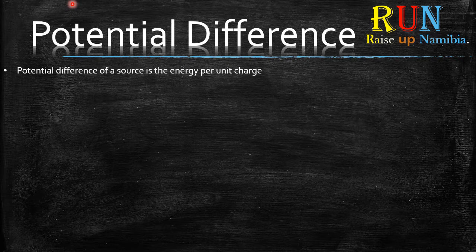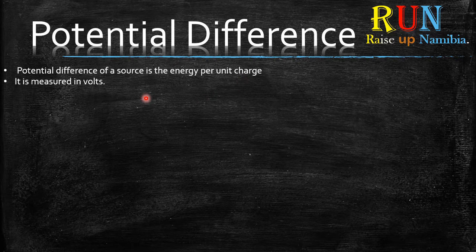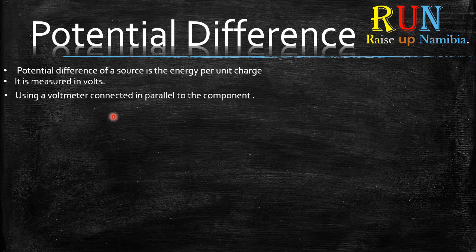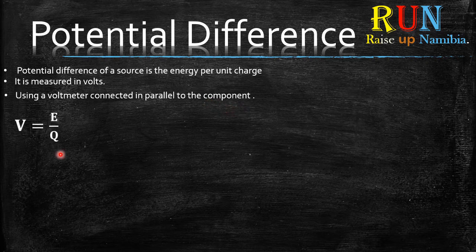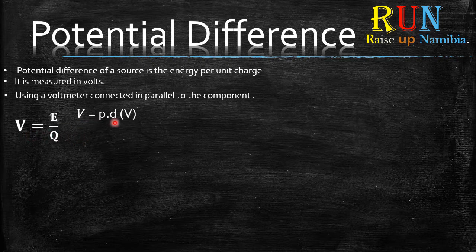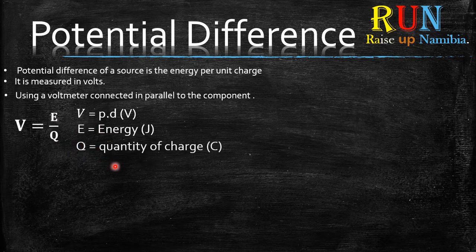it is actually the energy per unit charge. It is measured in volts, and this is done using a voltmeter which should be connected in parallel to the component being measured. The formula we use is V equals E divided by Q.